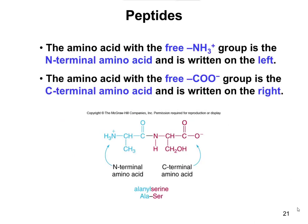For any dipeptide, tripeptide, or longer peptide chain, the N-terminal amino acid is always on the left with your NH3 group, and the C-terminal amino acid is on the right with the free COO-. So in a combination of alanine and serine, if asked which is the N-terminal amino acid, you'd say it's the one with the free NH3 group on the left — you identify the R group as CH3, which is alanine.